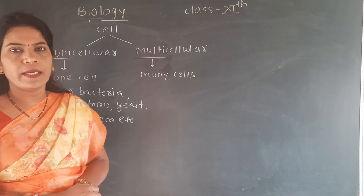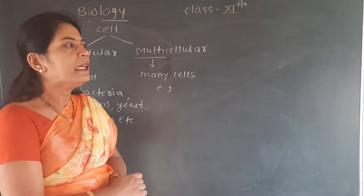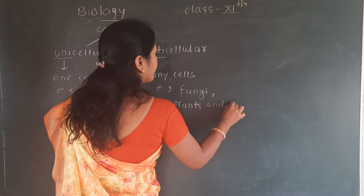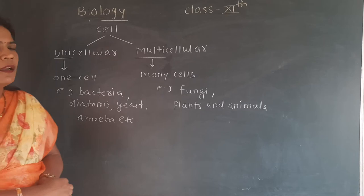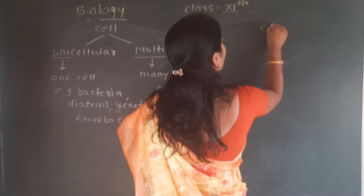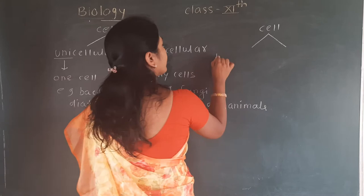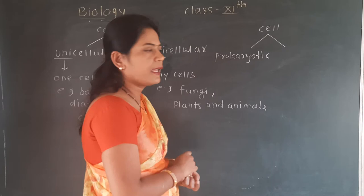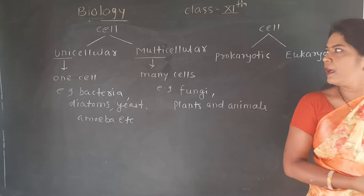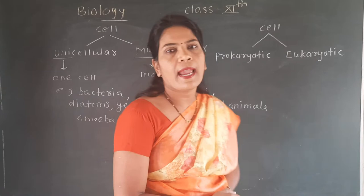Examples of multicellular organisms include fungi, plants, and animals — organisms whose body is made up of many cells. According to the structure of the cell, cells are again of two types: one type is called prokaryotic cell and another type is called eukaryotic cell.